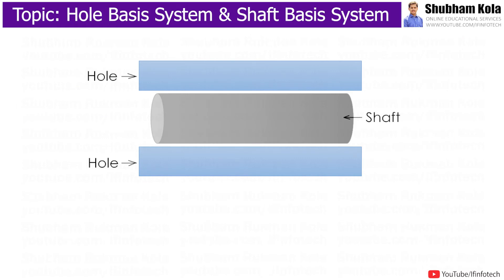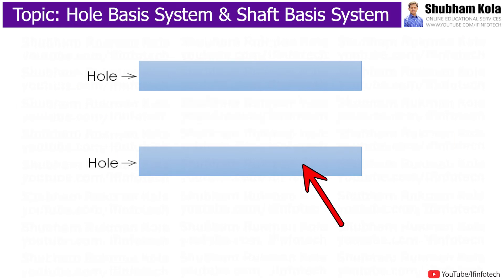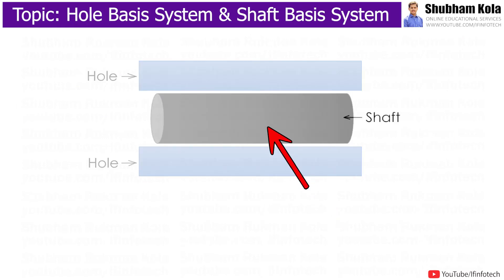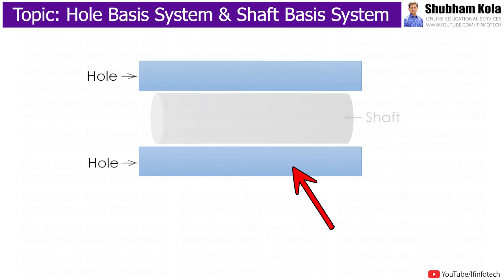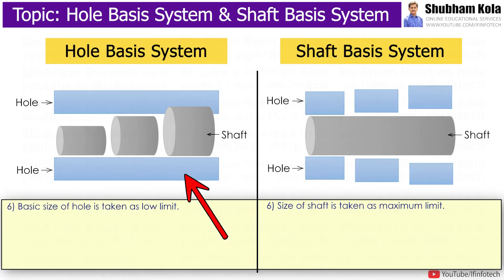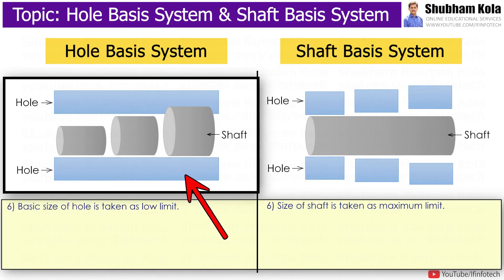In any hole and shaft assembly, the hole is always made first and the shaft is made to suit, because manufacturing a hole to a given dimension is difficult as we have standard drill bits for drilling a hole. That is why hole basic system is used in most industries.